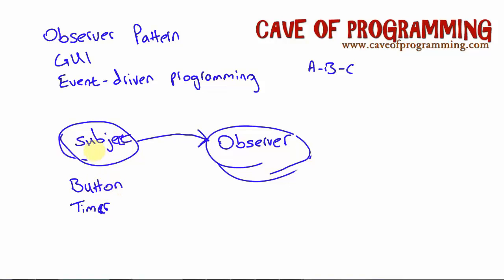Something happens in the subject that then must run code in the observer. The kind of model to keep in mind, and the reason this is called the observer pattern—and this is also called the listener, by the way, we can also call this the listener—the model to keep in mind is...